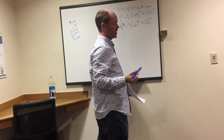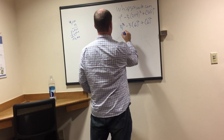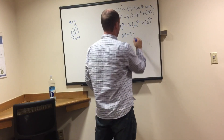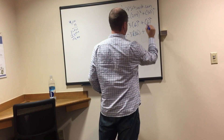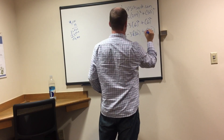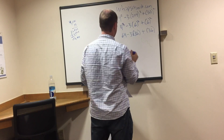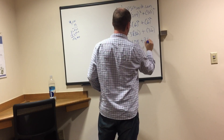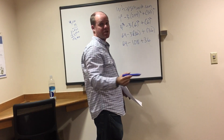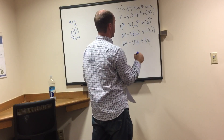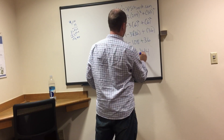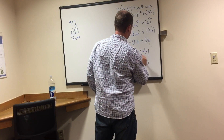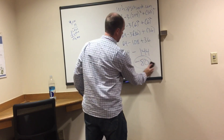Next in PEMDAS is exponents: 4 to the third is 64; 6 squared is 36 for both. So we have: 64 minus 3 times 36 plus 36. Then multiply: 3 times 36 is 108. So we have: 64 minus 108 plus 36. Add comes before subtract: 108 plus 36 is 144. Finally: 64 minus 144 equals negative 80. That's order of operations.